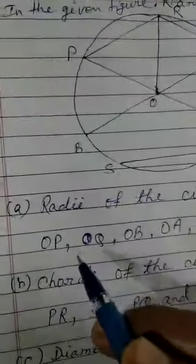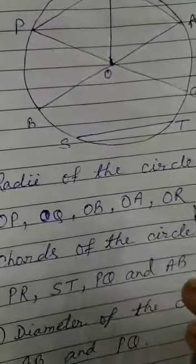So radii of the circle: OP, OQ, OB, OA, and OR.